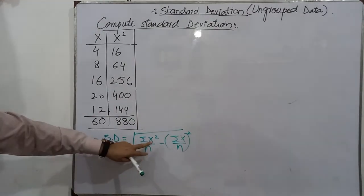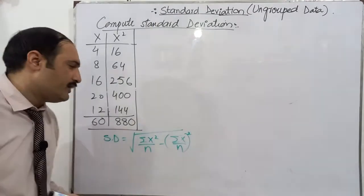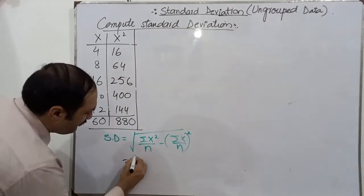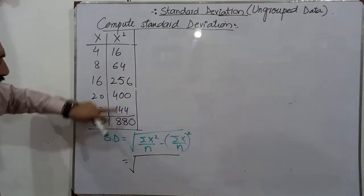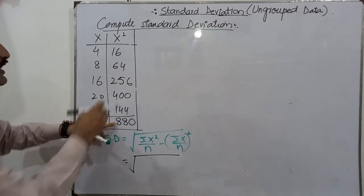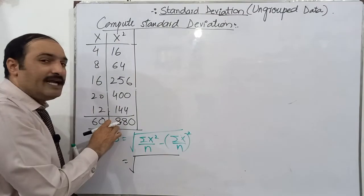Here is the formula. Summation x square over n minus summation x over n whole square. So we put here the values. What is the value of summation x square? This is called the sum. When we add these terms, here it is 880.